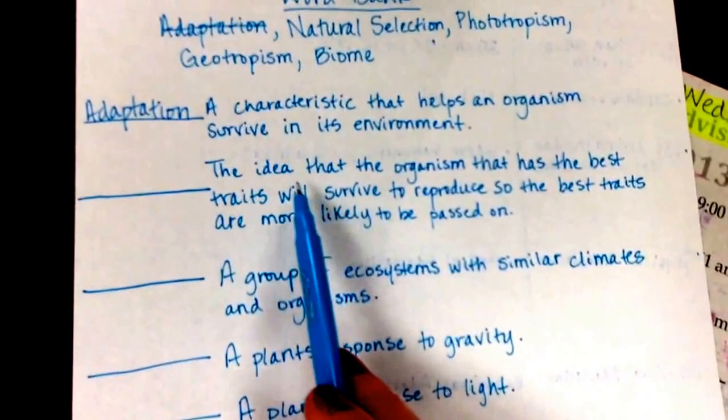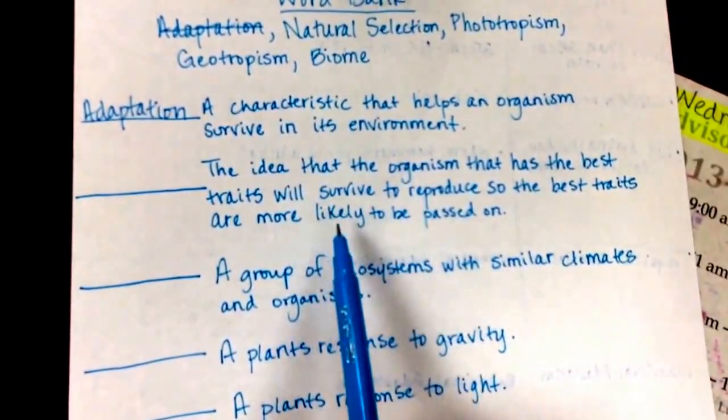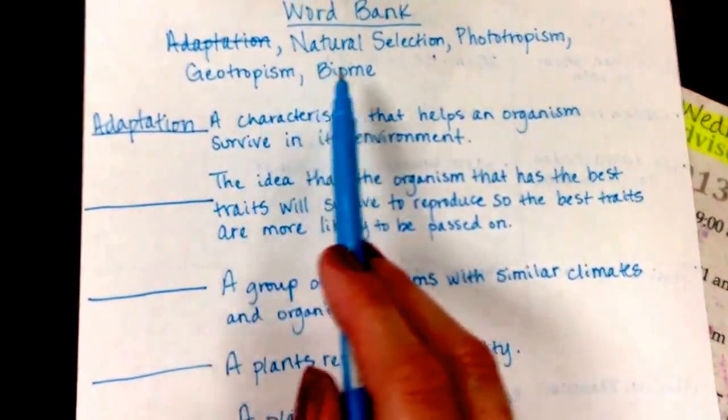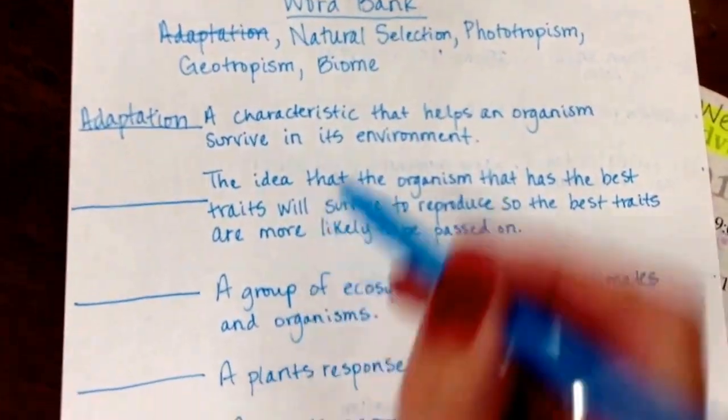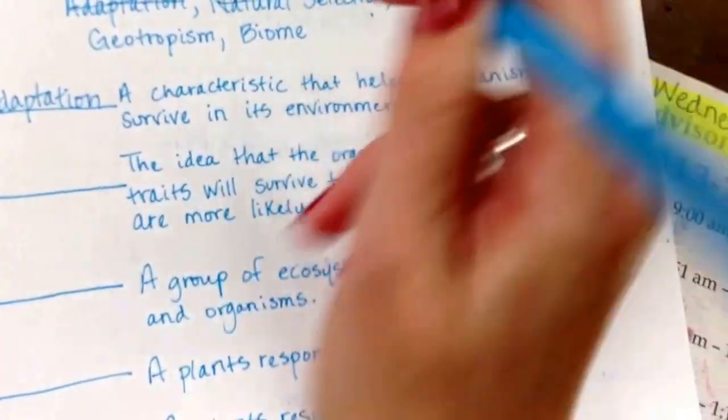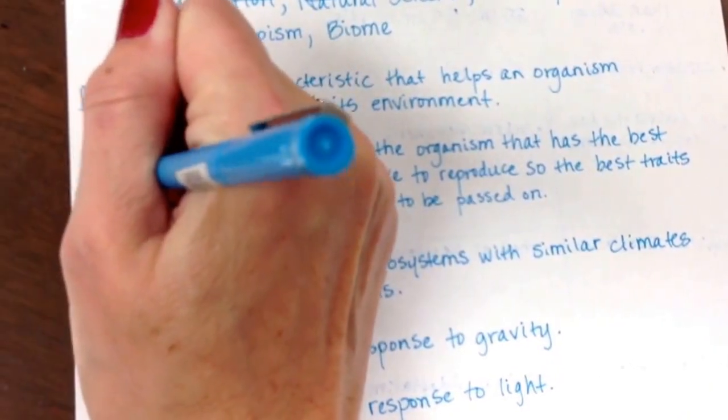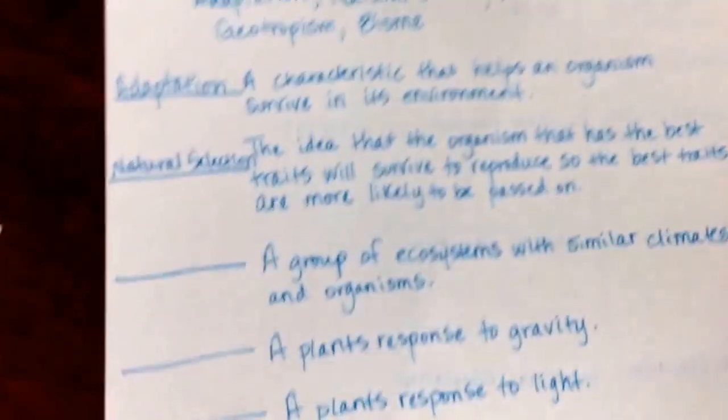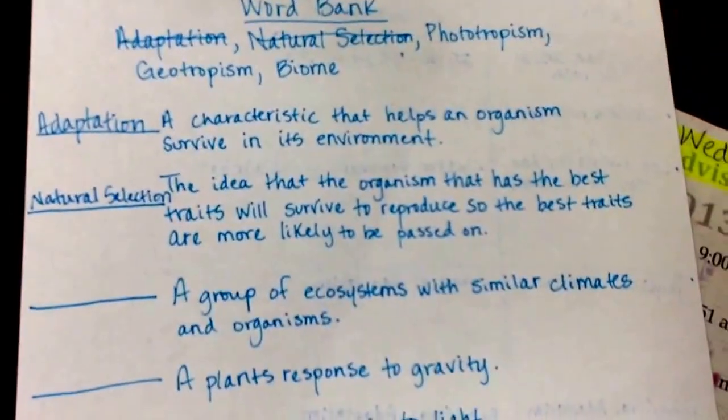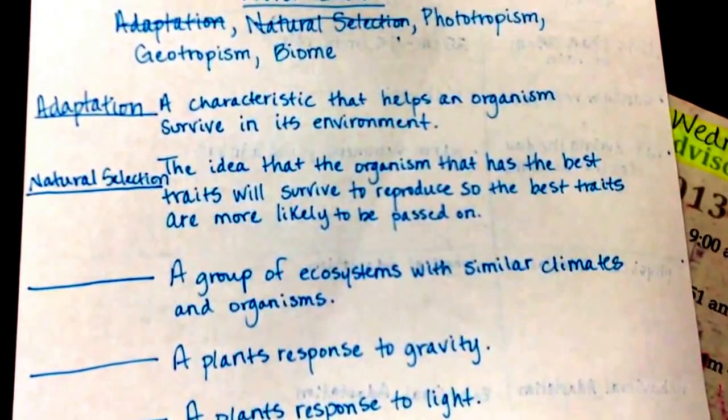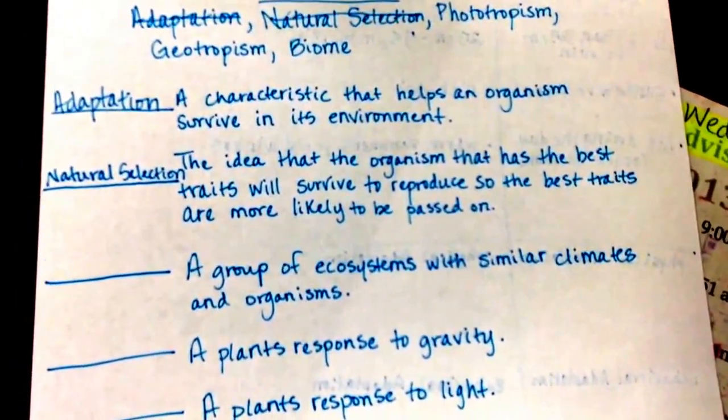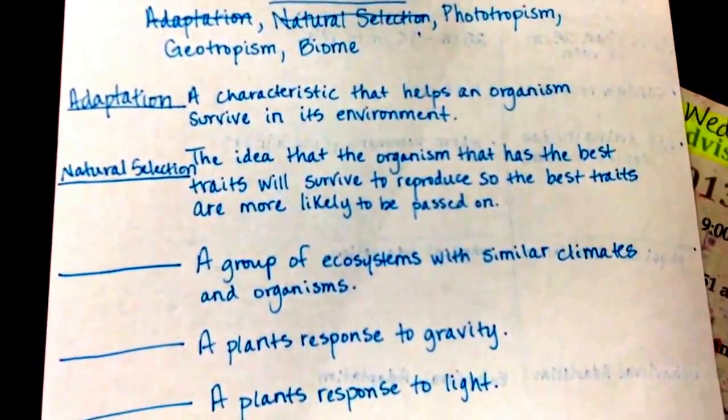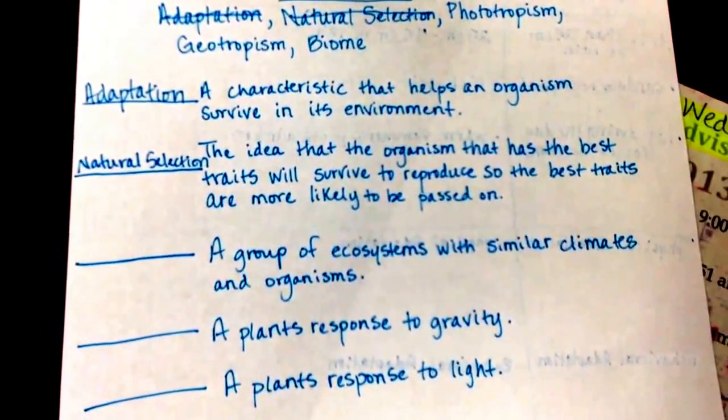And behavior could be like estivation where the reptiles will go into a summer sleep when it's extreme drought conditions. Let's go to the next definition. The idea that the organism that has the best traits will survive to reproduce, so the best traits are more likely to be passed on. Which word would best fit that definition? It's natural selection. We talked about natural selection with the jackrabbit ears. The jackrabbits with the longer ears could give off more body heat in the desert which helped them live a little bit longer.